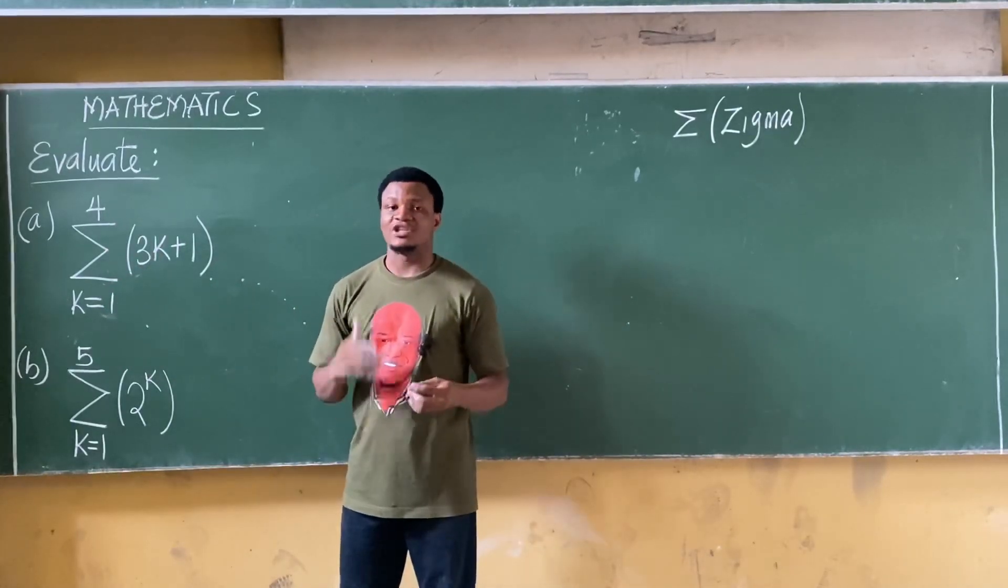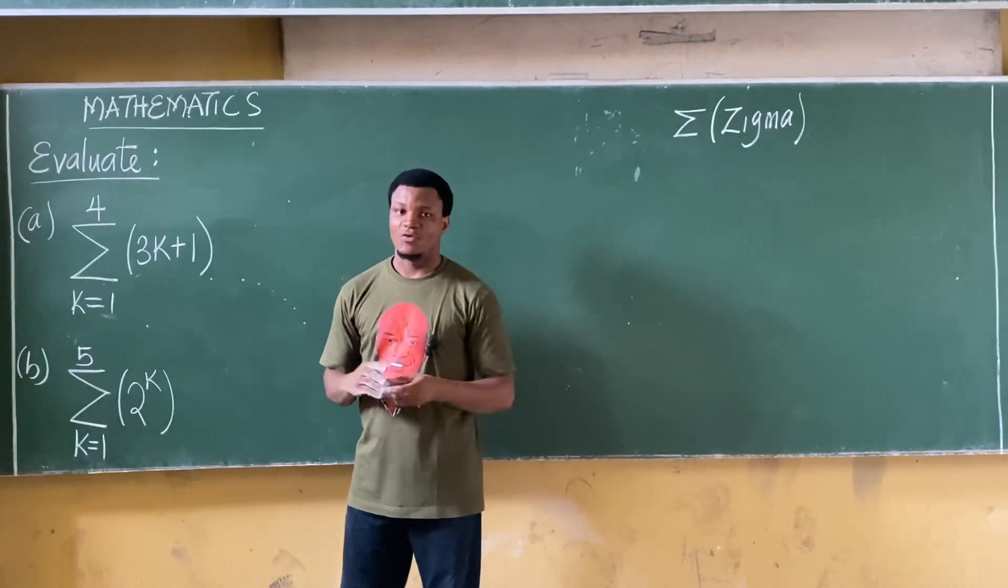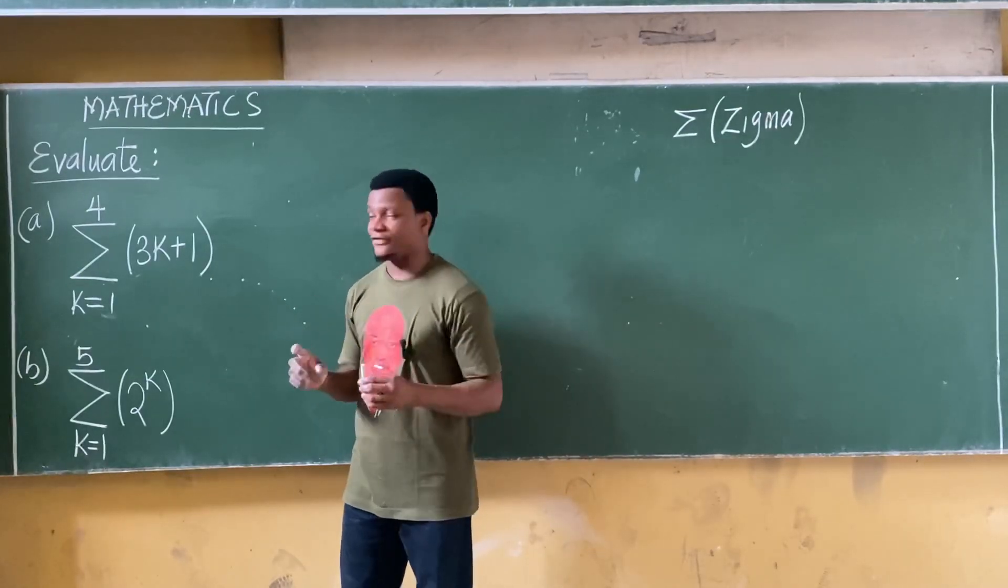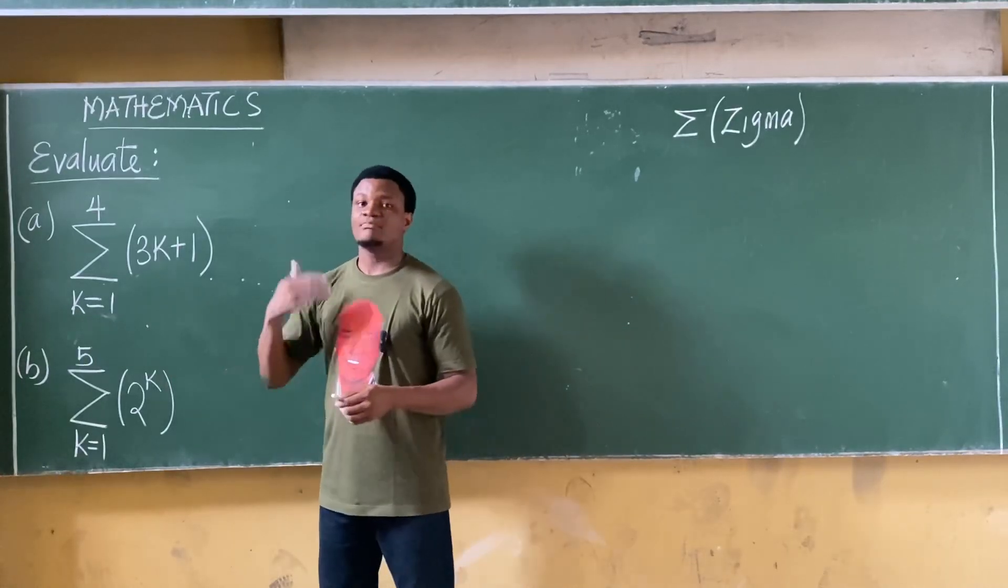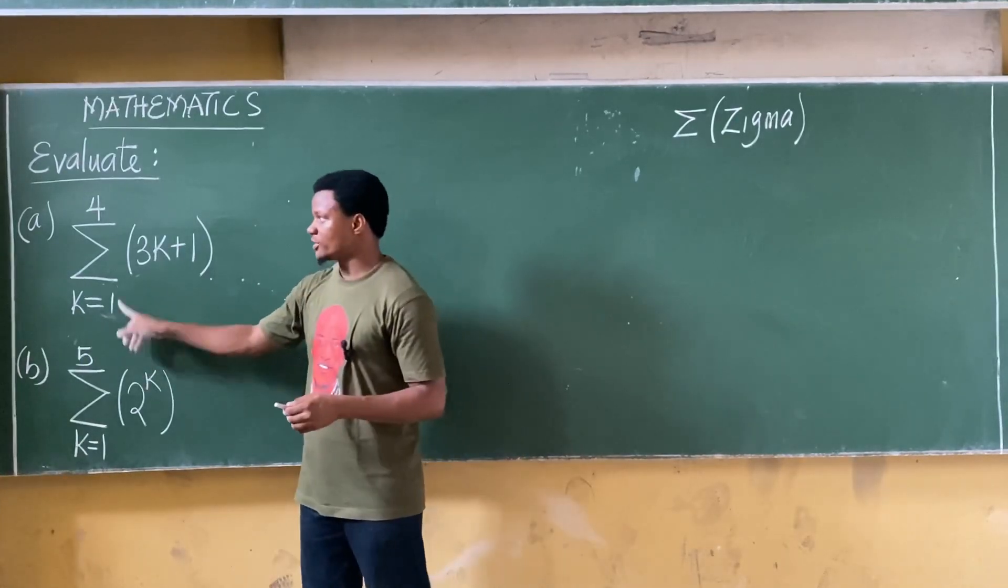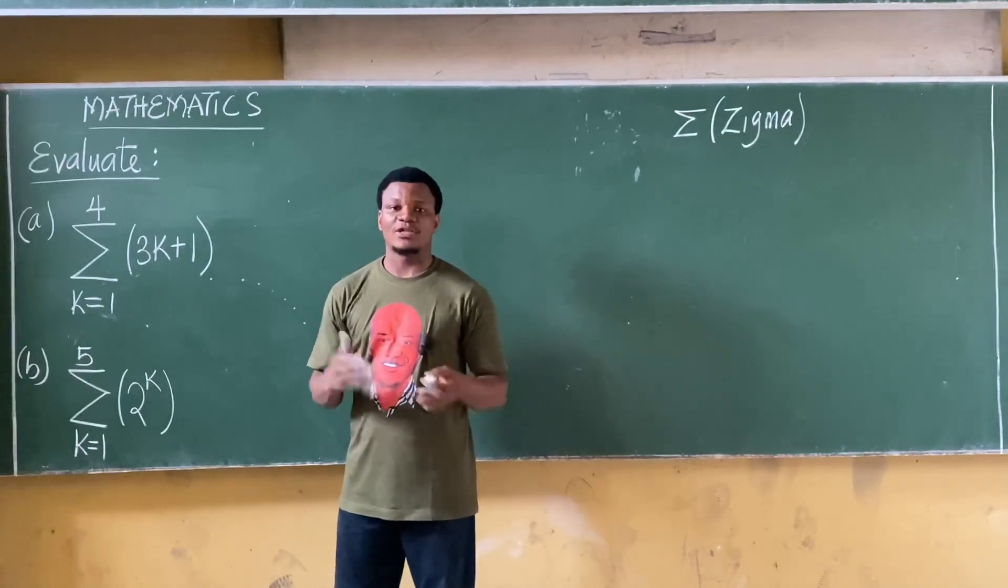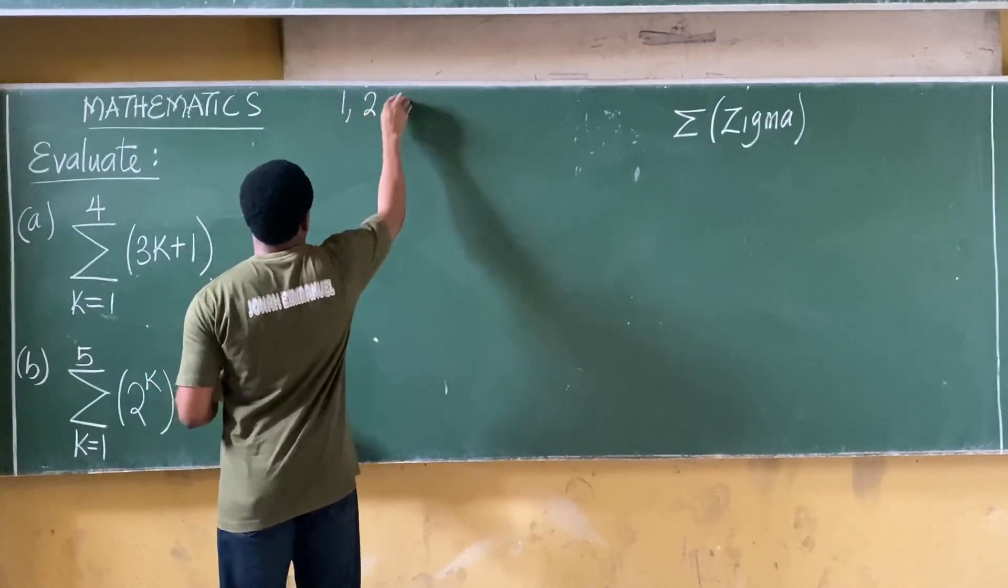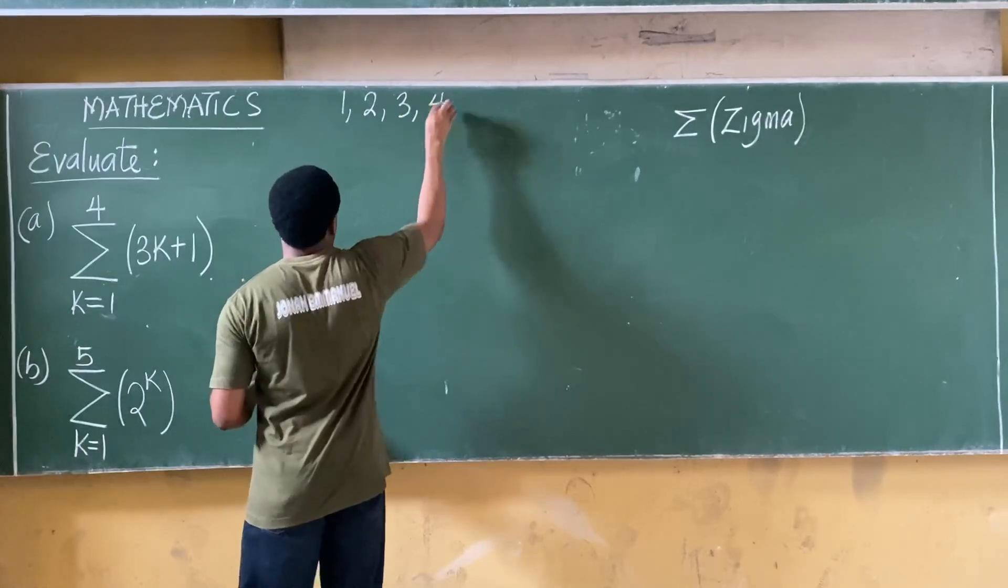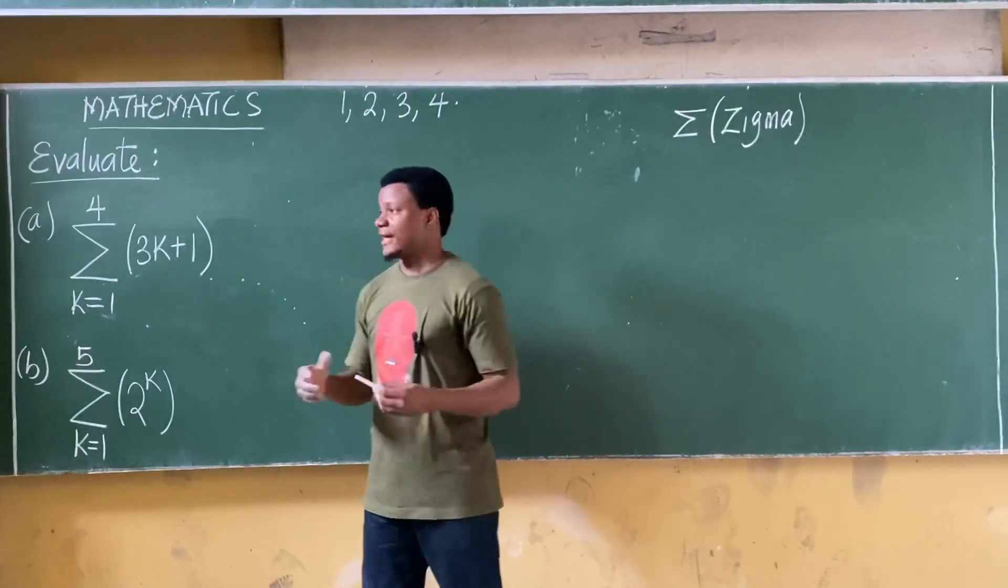Notice that the numbers we are taking are actually integers, which means they are positive or negative whole numbers. So I'm starting from one and taking positive whole numbers from one to four, so possible numbers from one to four would be one, two, three, and four. This is the concept.